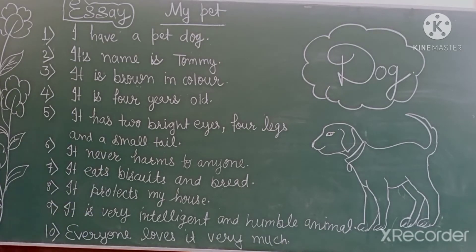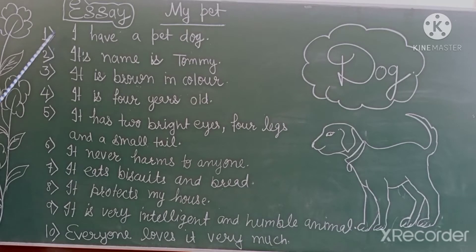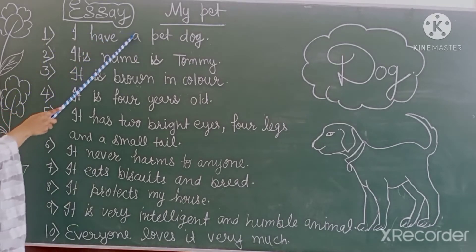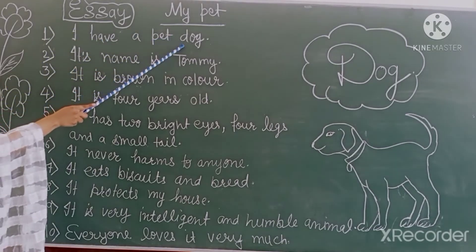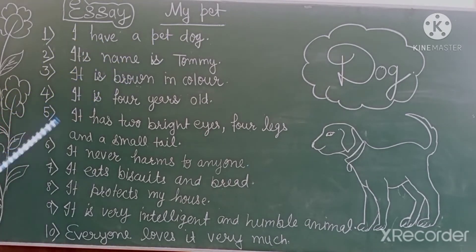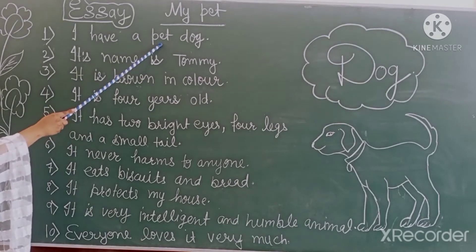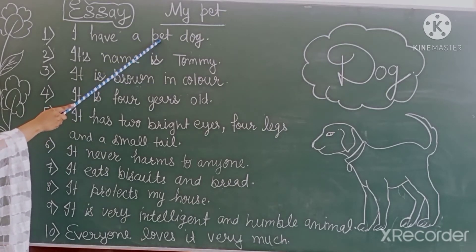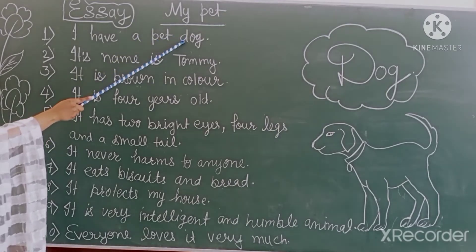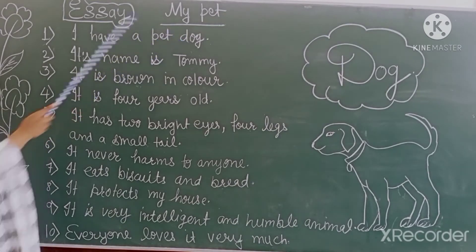We will start from the first line. The first line is: I have a pet dog. Mere paas ek pyaara kutta hai.